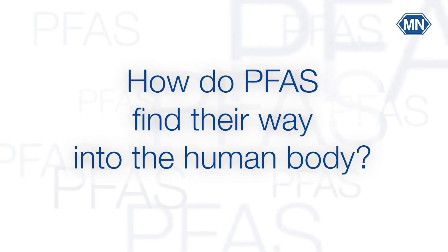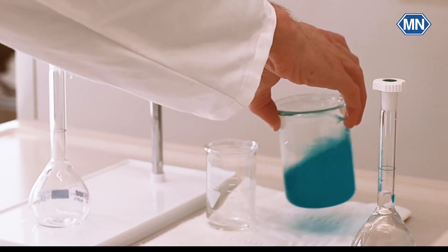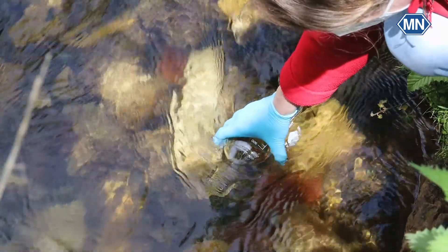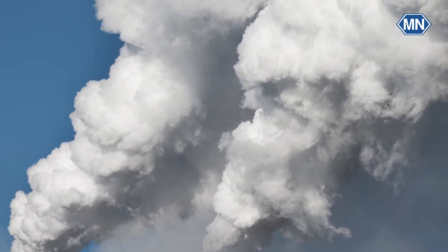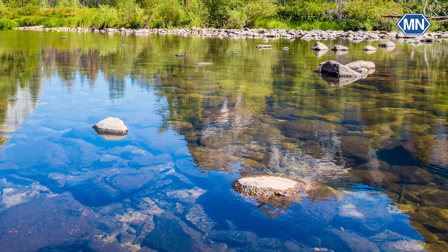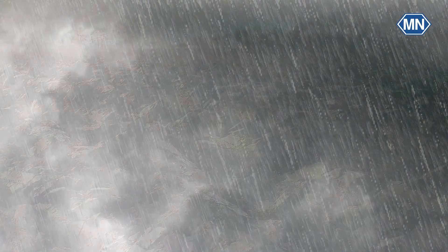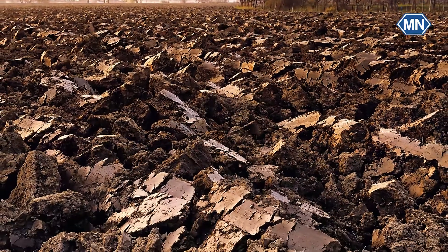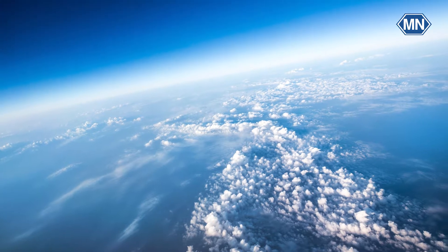How do PFAS find their way into the human body? PFAS have been manufactured for more than 80 years, but health effects were neglected for a long time. PFAS are emitted into the environment by different pathways. For example, exhaust air from industrial sources can contain PFAS and thus are dispersed into nearby bodies of groundwater. Rain and snow can eventually carry them from the air into the soil and surface waters. Particle accumulation can even cause them to travel long distances through the air.